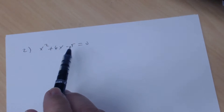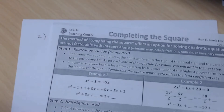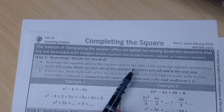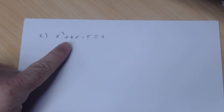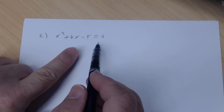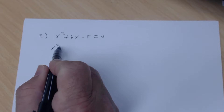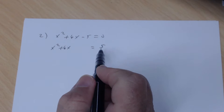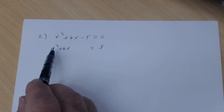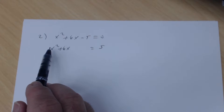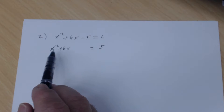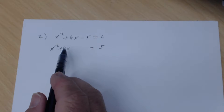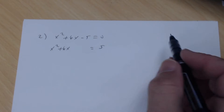Number 2: x² + 6x − 5 = 0. Step one: move the constant to the right, so x² + 6x + ___ = 5. The coefficient of x² is 1. Take the coefficient of x, which is positive 6, divide by 2 to get 3.